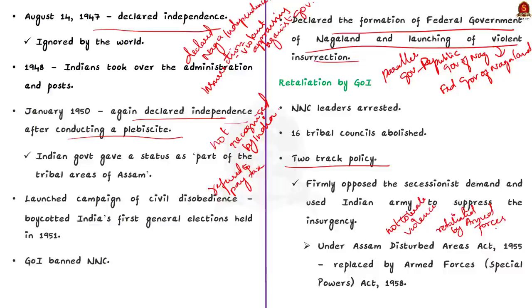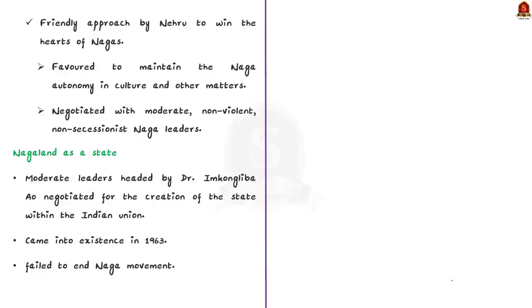On the other hand, the Government of India realized military action would not win the hearts of the Naga people. So Nehru carried out a friendly approach, maintaining Naga autonomy in culture and other matters. He negotiated with moderate, non-violent, non-secessionist Naga leaders — not with Phizo or his supporters due to their armed rebellion. As a result, some moderate leaders headed by Dr. Imkongliba Ao negotiated for the creation of the state of Nagaland within the Indian Union. Hence, the state of Nagaland came into existence in 1963. But this failed to end the movement, as the majority of Naga-inhabited areas were left outside the new state.